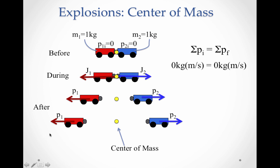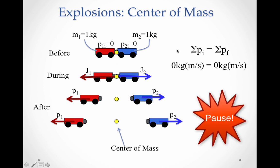Now let's look at explosions with center of mass. We have two carts back-to-back and they are going to push off of each other. Their initial momentum is each zero, so the initial momentum of the system is zero — conservation of momentum. As they explode, they each receive an impulse. With equal mass, they'll both go with equal momentum and equal velocity in both directions, but their center of mass stays in the very center. The center of mass never moves, showing that the initial and final momentum of the system are both zero. This is evidence for conservation of momentum.